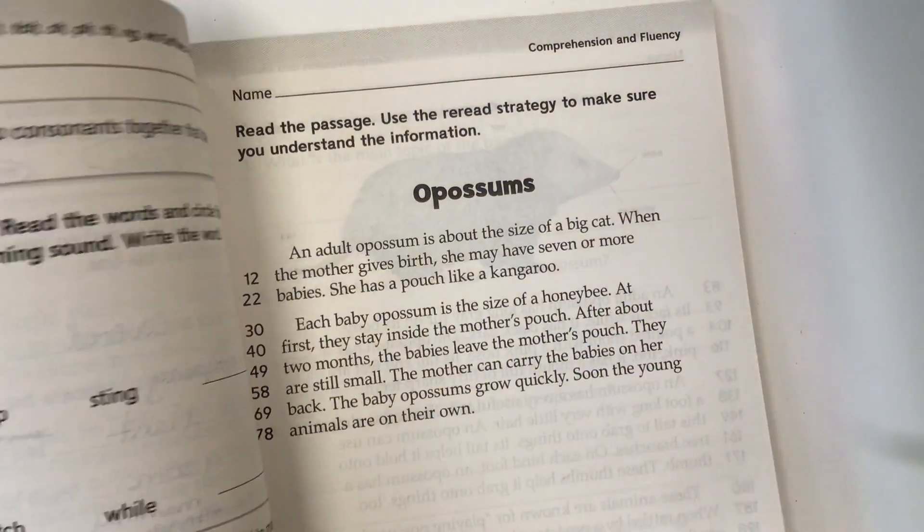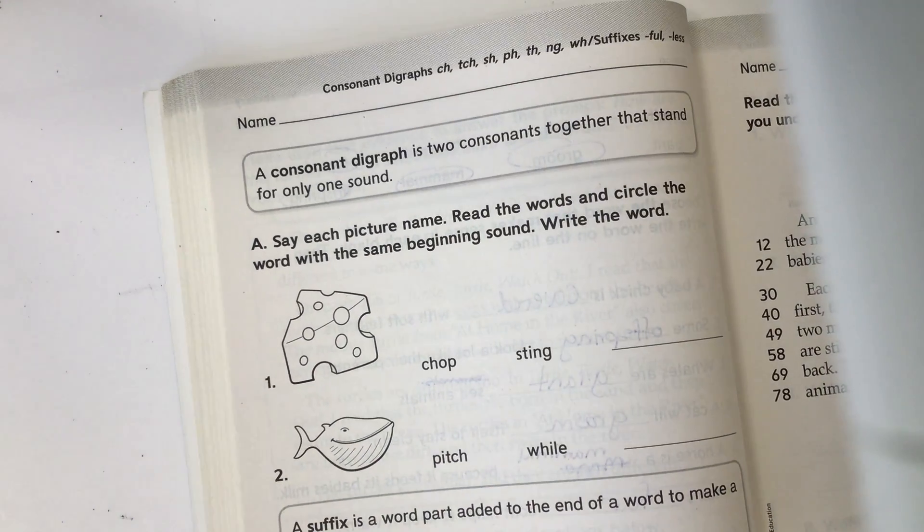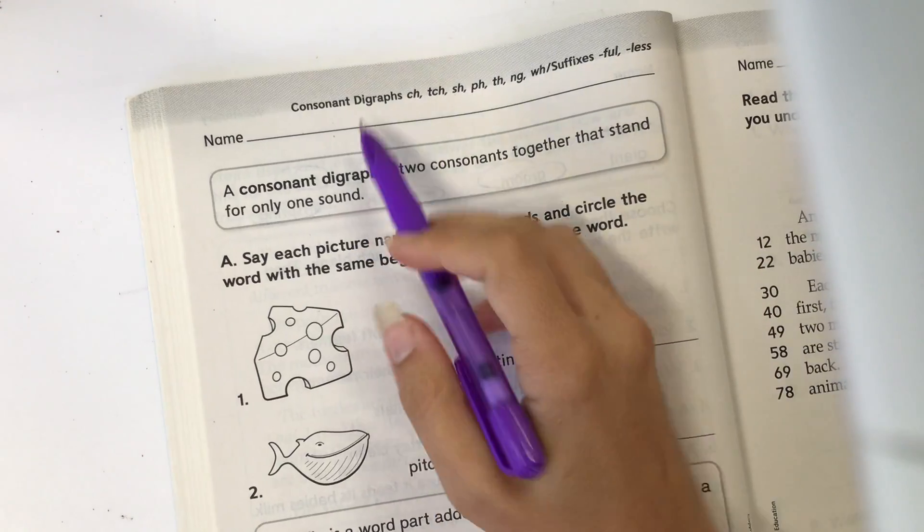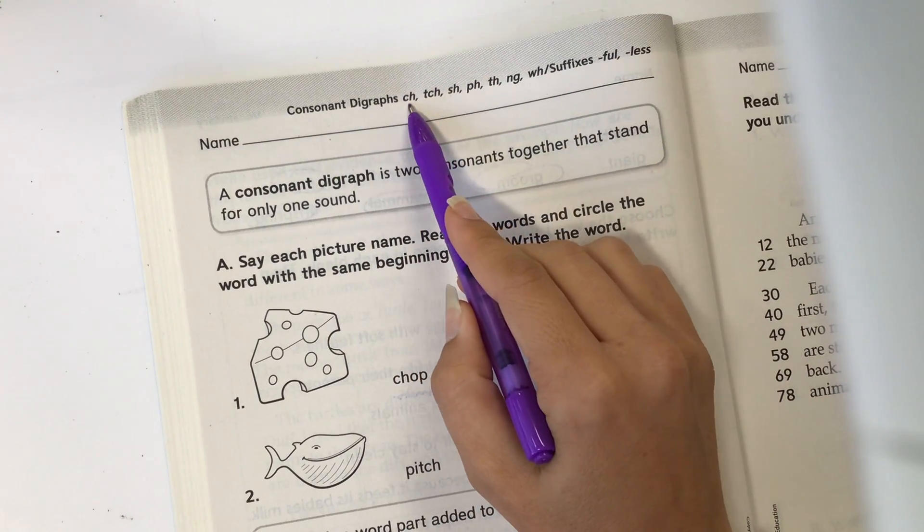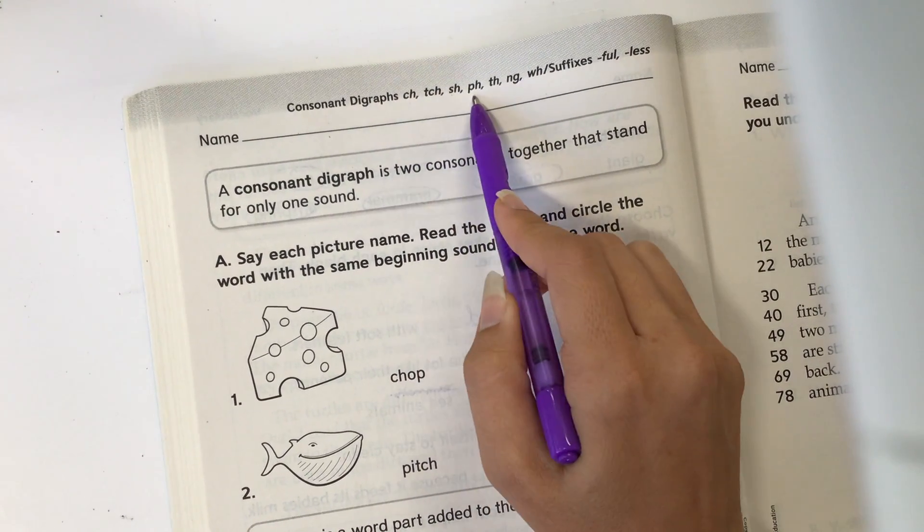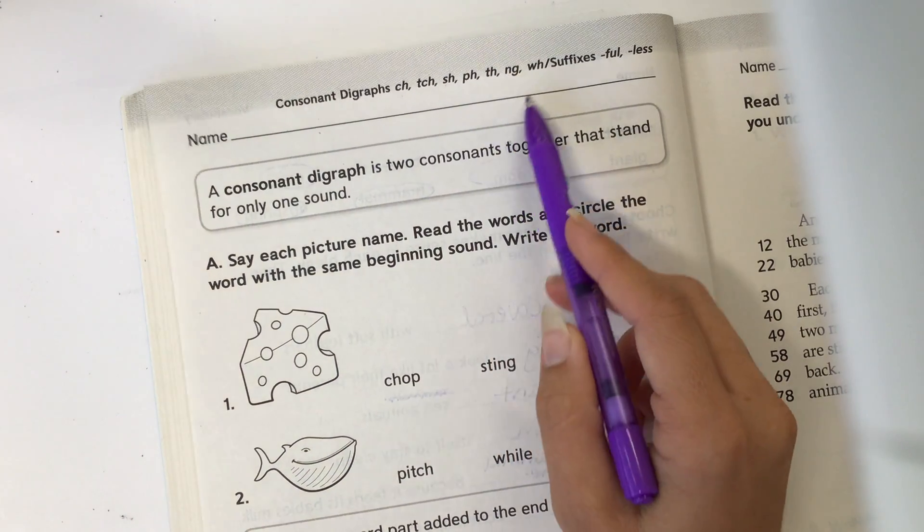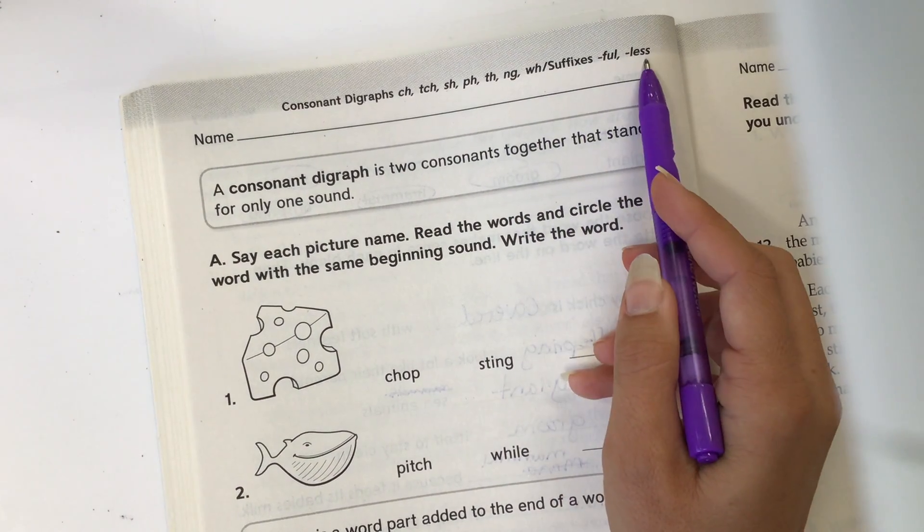We're working in the second grade your turn practice book on page 82 today, and we're going to be talking about consonant digraphs: ch, t, sh, f, th, n, and suffixes full and less.